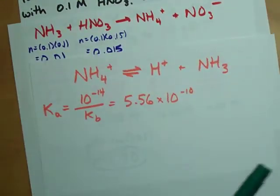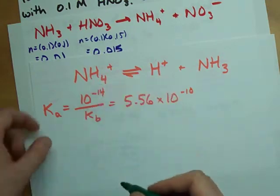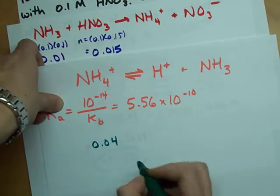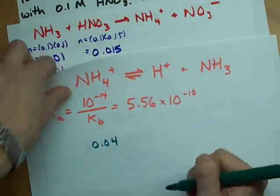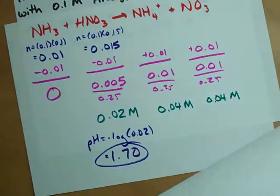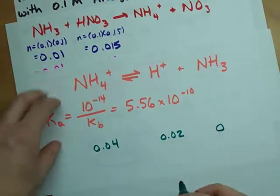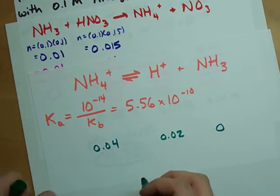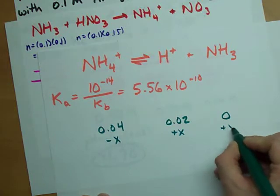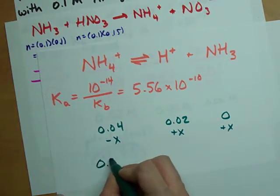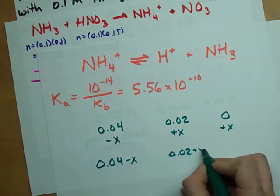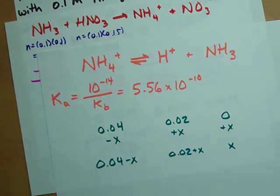I have a habit of writing where you guys can't see it. Initial concentration of NH4+, 0.04. Initial concentration of acid, 0.02. Initial concentration of NH3, 0. What's going to happen? Well, we're going to lose some of this, gain some of that, and gain some of that, so that our equilibrium concentrations are 0.04 minus x, 0.02 plus x, and x itself.